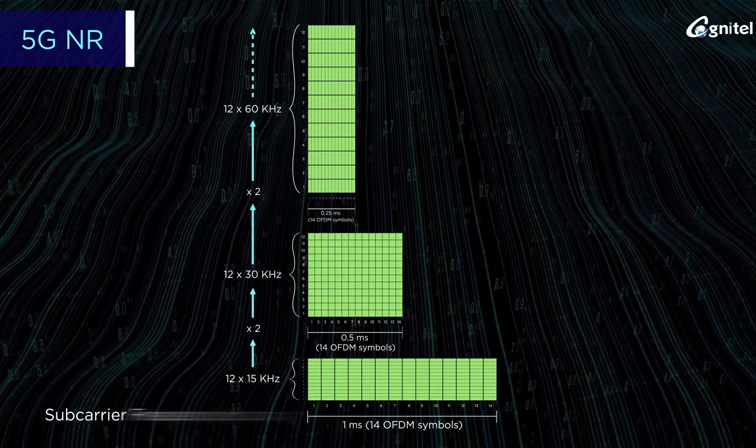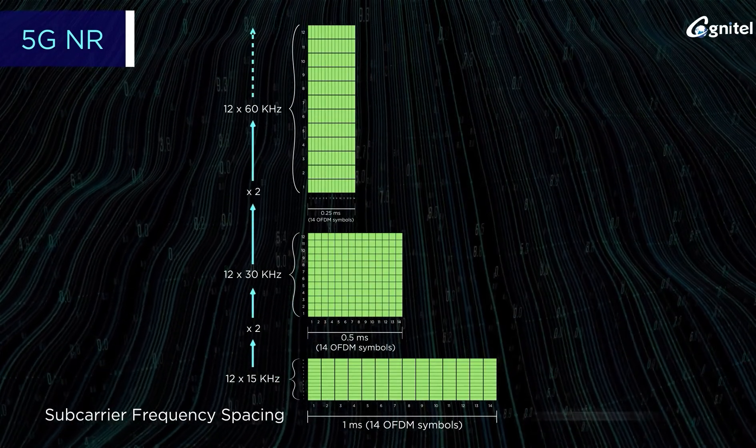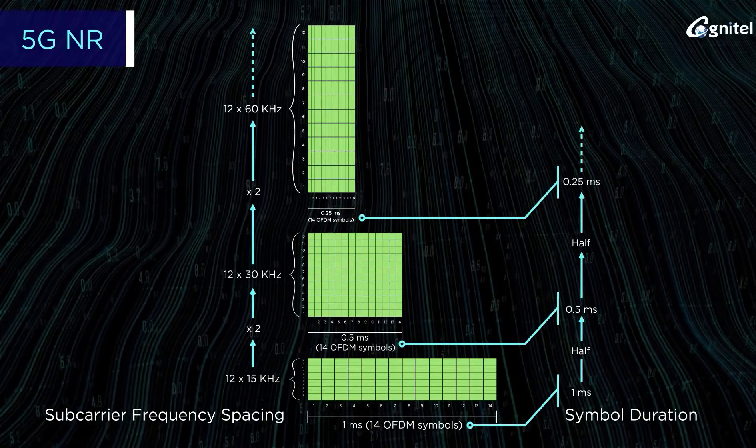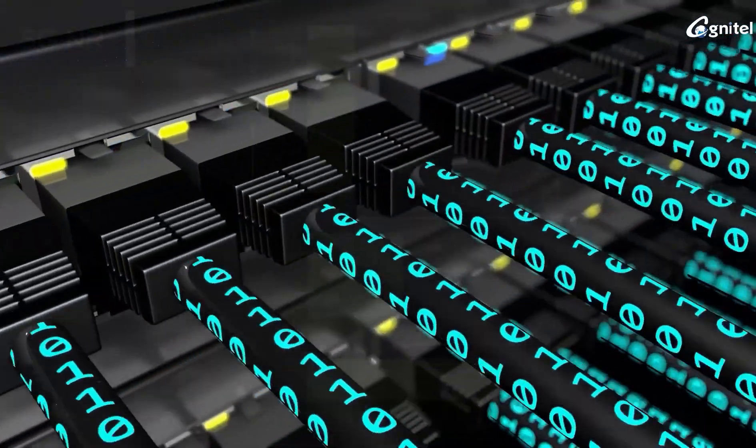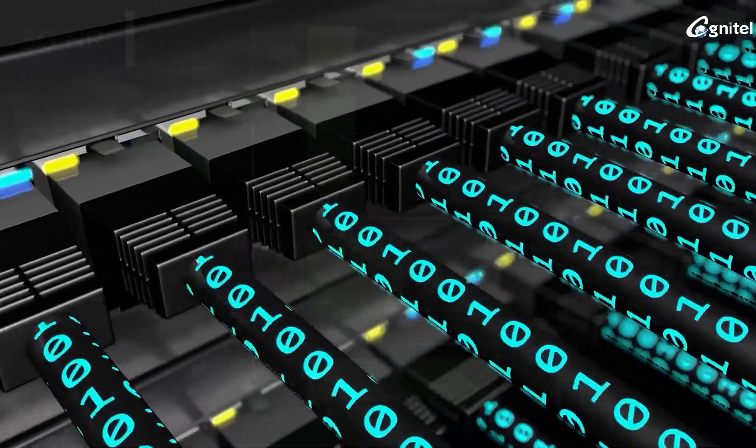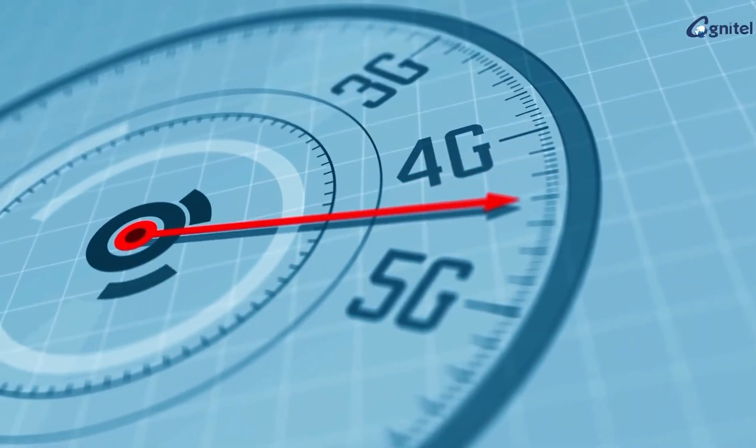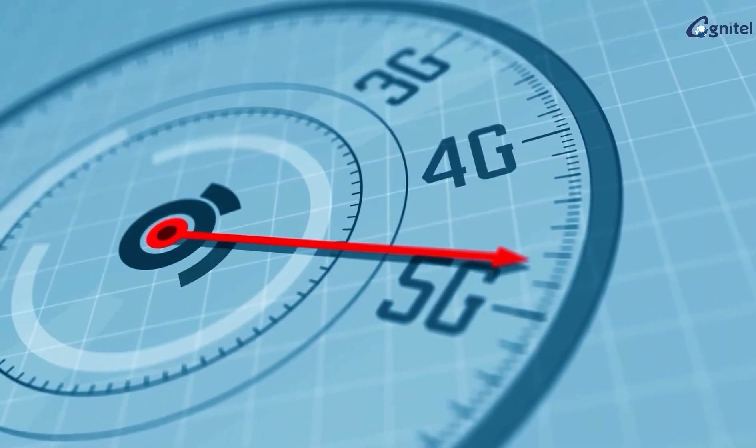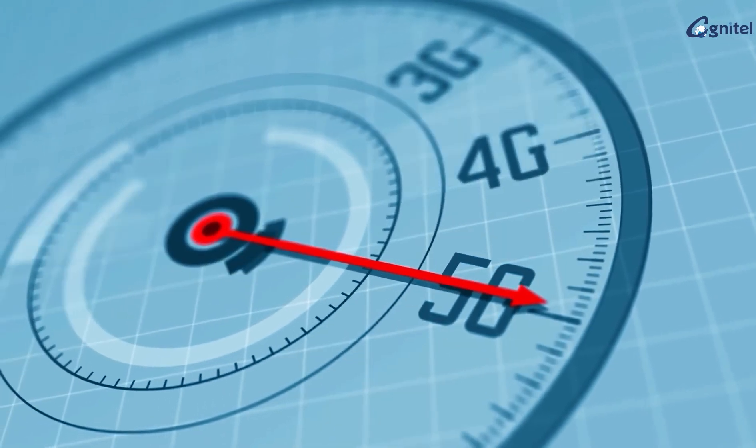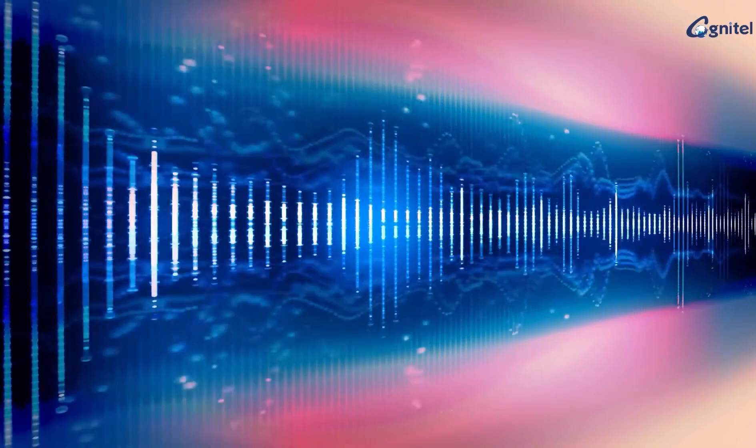This is because with the double-fold increase in subcarrier frequency spacing, symbol duration gets reduced to half. This ultimately lets more data throughput transmission in lesser time durations and hence there is increase in data rates in 5G NR compared to LTE.